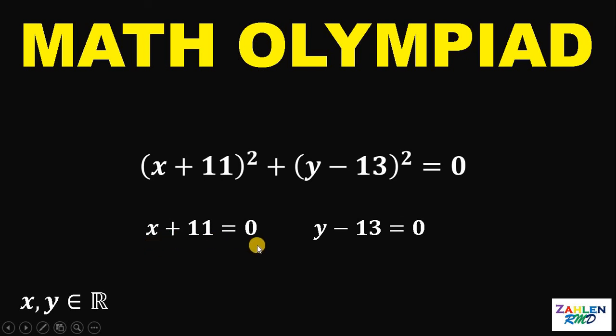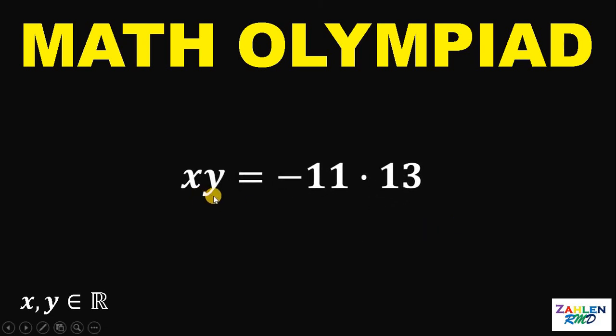Now, x plus 11 equals to 0 tells us that x equals negative 11. And then, on the other equation, y minus 13 equals to 0 tells us that y must be 13. Now, we have the value of x and we have the value of y. Take note that our goal here is to solve for the value of x times y.